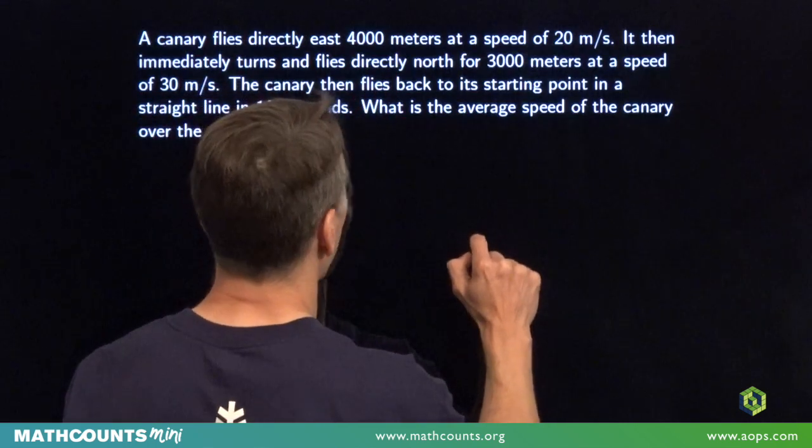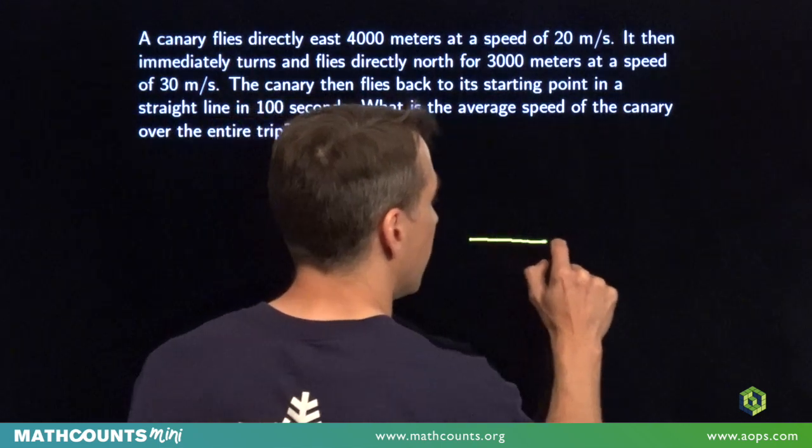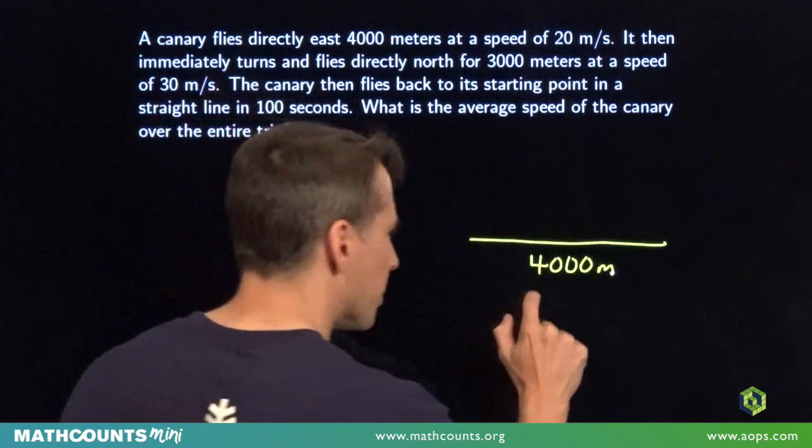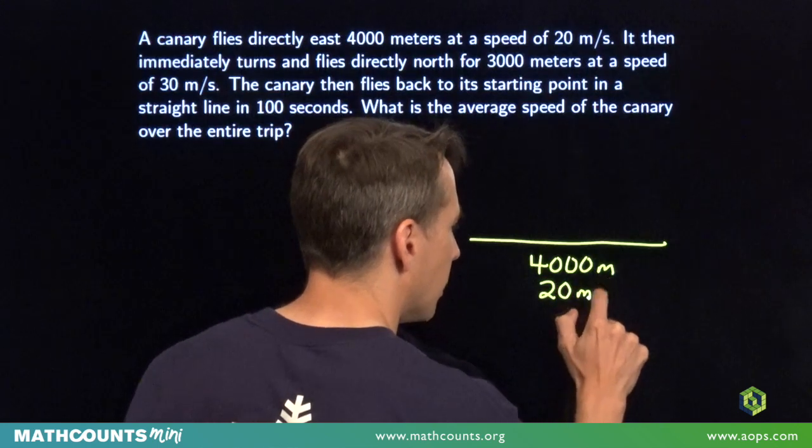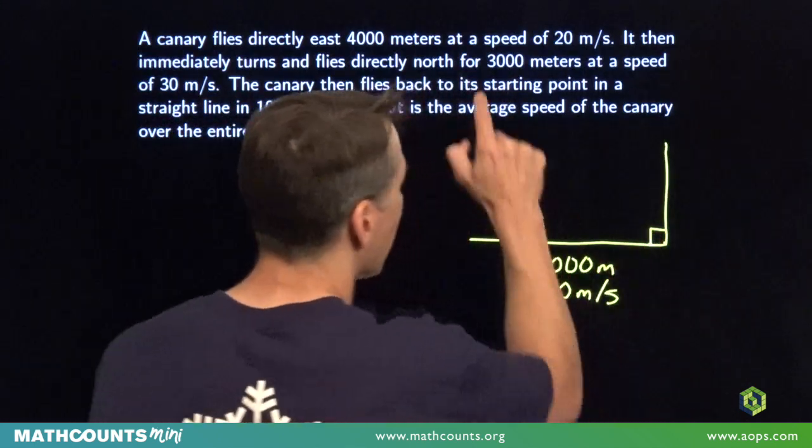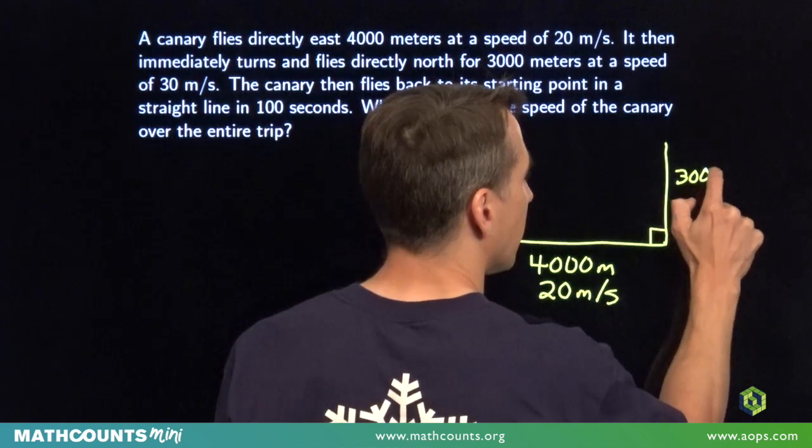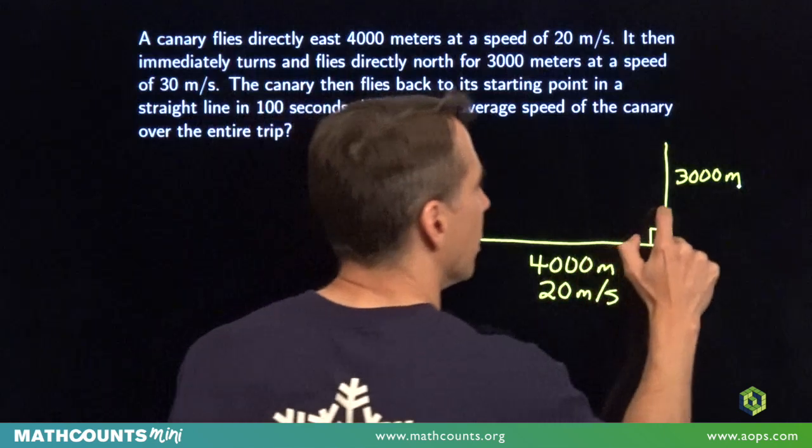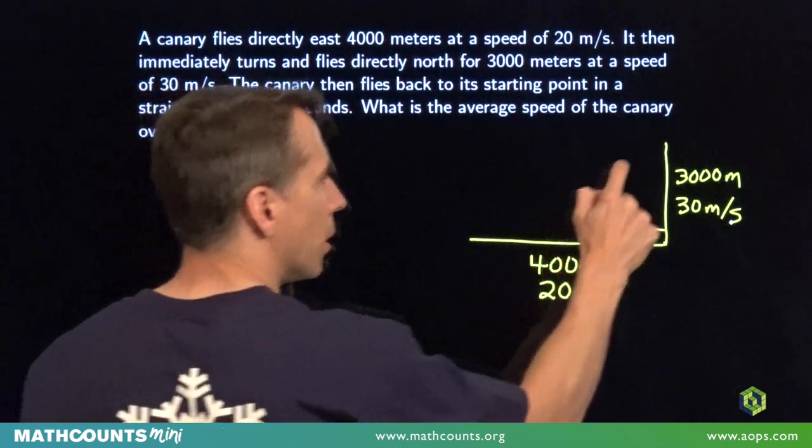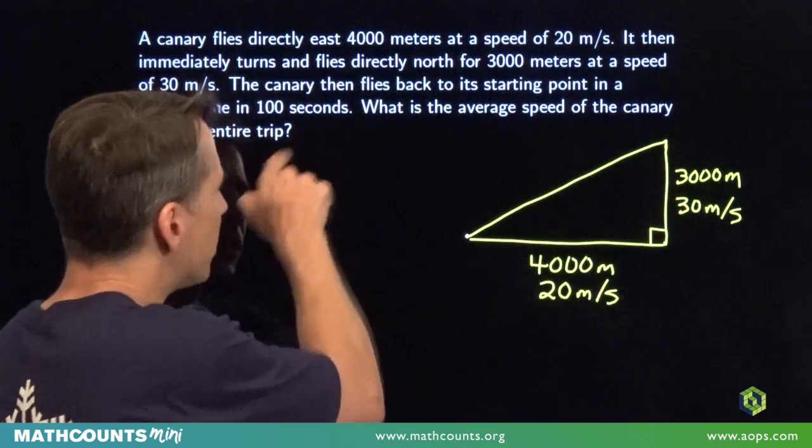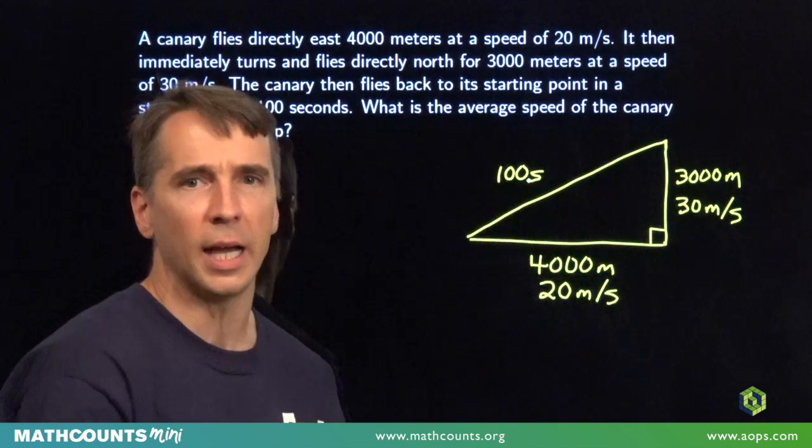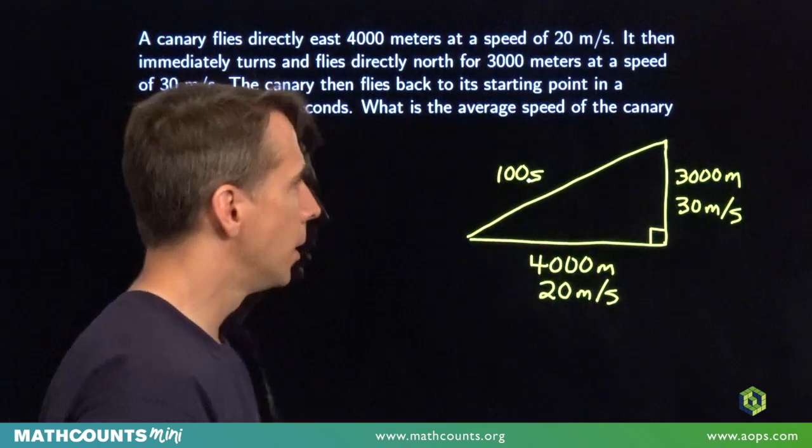The canary flies directly east 4,000 meters. There we go. 4,000 meters at a speed of 20 meters per second. And then flies directly north 3,000 meters at 30 meters per second. And then it flies straight back to where it started in 100 seconds. This is nice. We have everything nice and organized here. It's really nice to draw a picture.